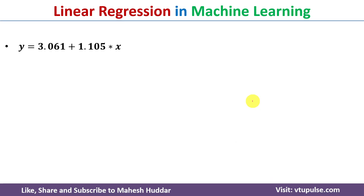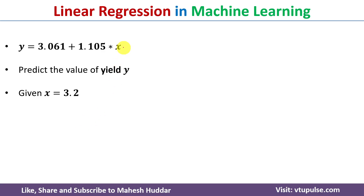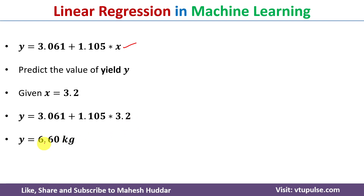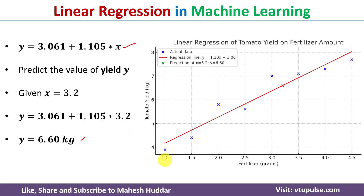In the problem we are given x equals 3.2. Substituting into the equation gives y = 3.061 + 1.105 × 3.2, which equals approximately 6.06 kg. Next, we plot the graph with fertilizer on the x-axis and tomato yield on the y-axis. For x = 3.2, we get y = 6.06, which is shown on the graph. This is how we find the linear regression equation and predict the yield for a given fertilizer value.